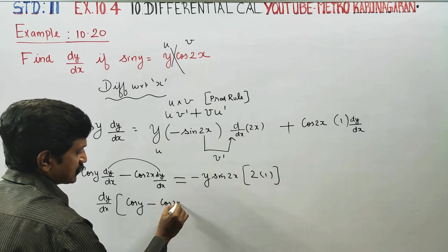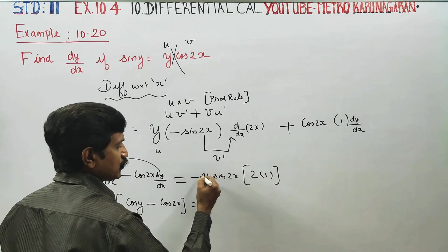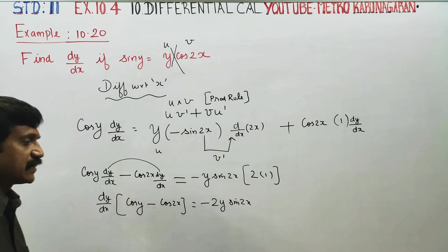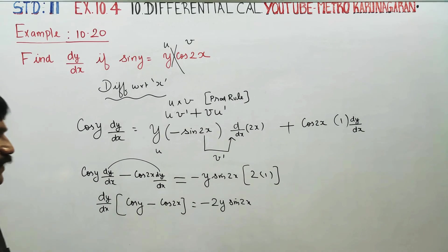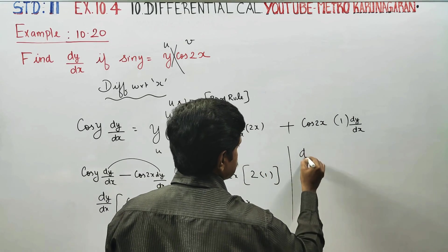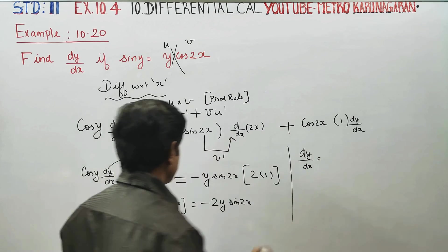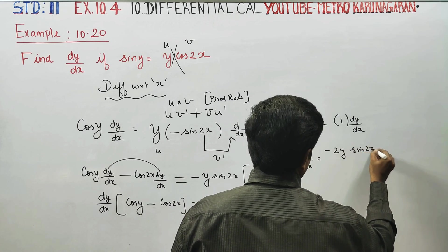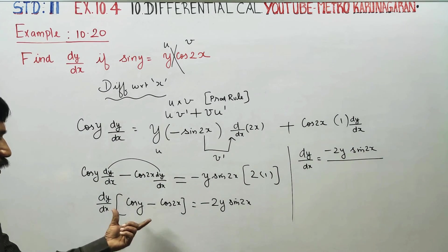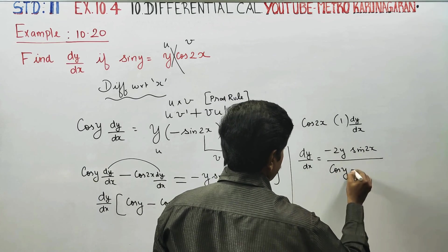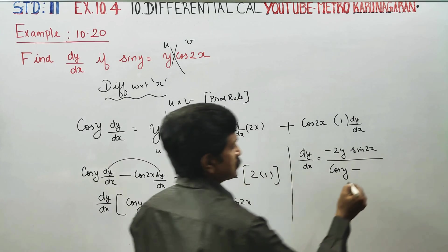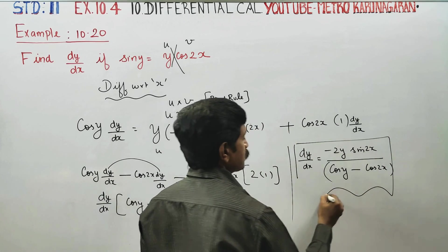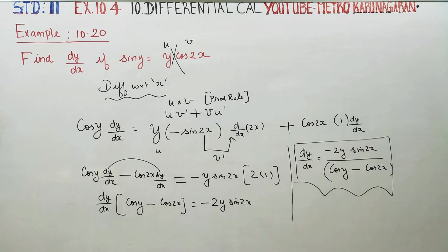Rearranging: cos y minus cos 2x equals minus 2y sin 2x. Therefore the final answer is dy by dx is equal to minus 2y sin 2x, whole divided by cos y minus cos 2x. That is the final answer for this problem. Thank you.